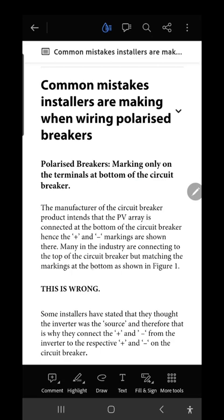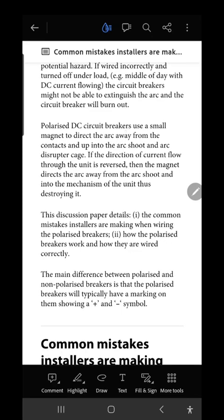Polarized DC circuit breakers use a small magnet to direct the arc away from the contacts and up into the arc chute and arc disruptor cage. If the direction of the current flow through the unit is reversed, then the magnet directs the arc away from the arc chute and into the mechanism of the unit.